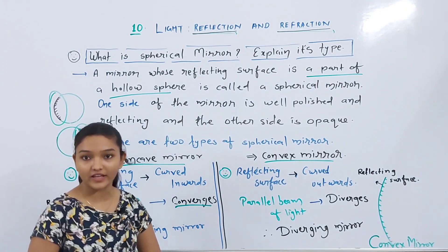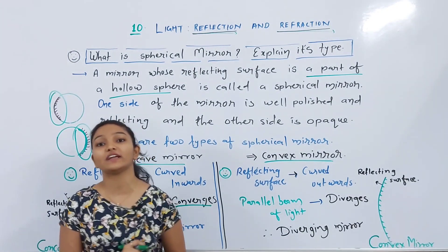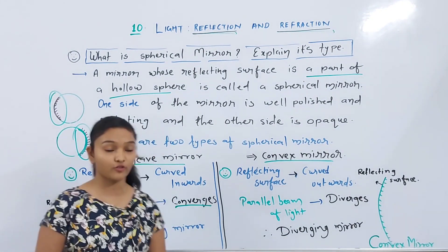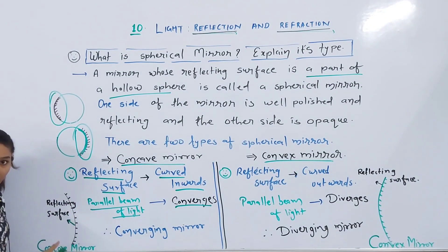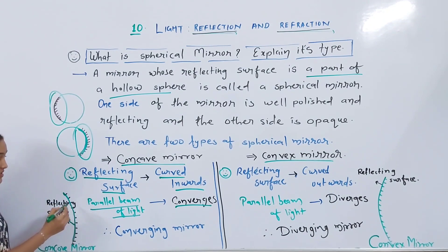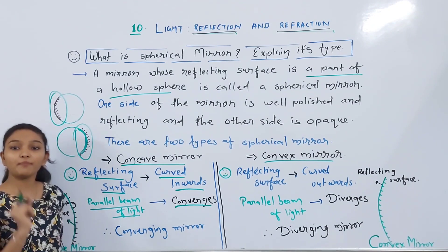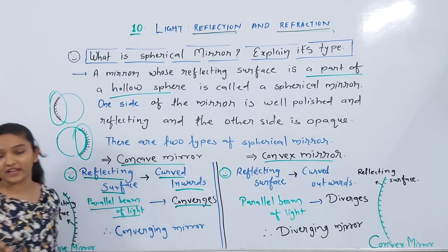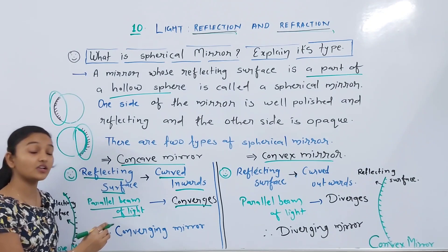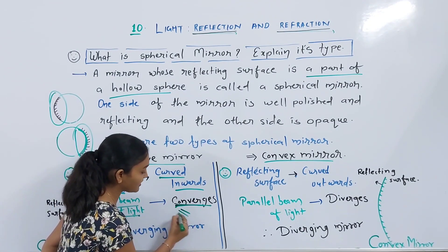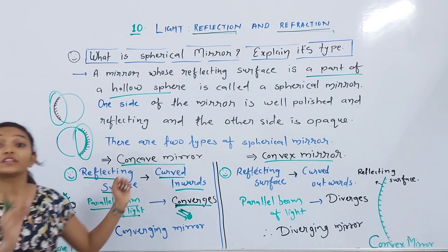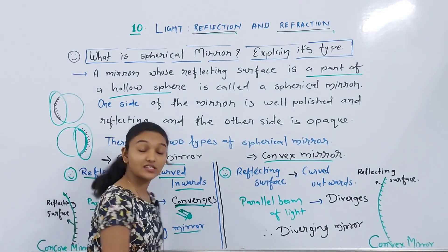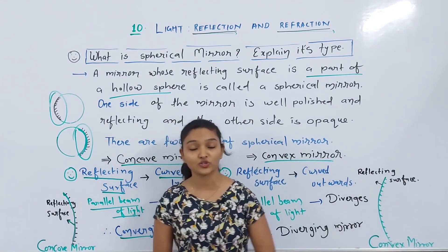A spherical mirror whose reflecting surface is curved inwards is called a concave mirror. The inside is the reflecting surface and the outside is opaque. When a parallel beam of light converges after reflection from such a mirror — meaning many rays meet at one point — it is known as a converging mirror. Hence the concave mirror is also known as a converging mirror.